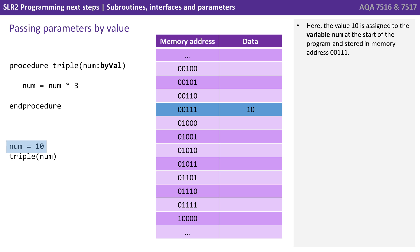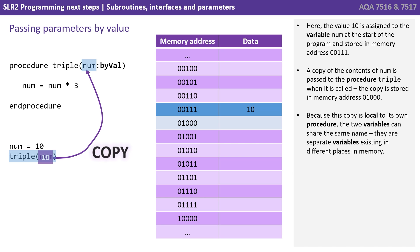Here, the value 10 is assigned to the variable num at the start of the program, and stored in memory address 00111. A copy of the contents of num is passed to the procedure triple when it's called. The copy is stored in memory address 0100. Because this copy is local to its own procedure, the two variables can share the same name. They're separate variables existing in different places in memory.